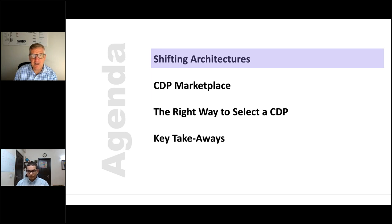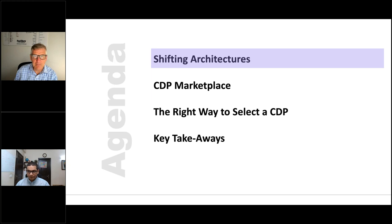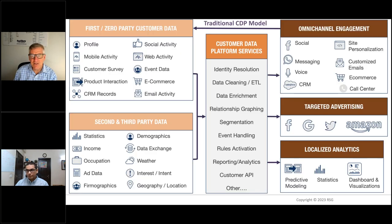Each particular marketplace is a different line on this subway map. Today we're talking about the orange line — customer data platforms. It's a really interesting space; we've been covering this technology now for about five years, watching these vendors very closely, learning from them mostly about your needs and watching the marketplace evolve. It's always important to take a look at CDP technology in the context of your broader martech stack, so we'll be talking about that as well.